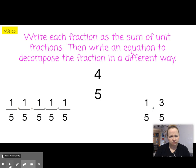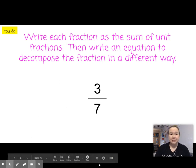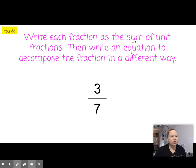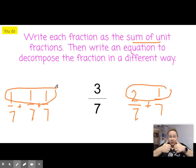Here's a you-do. Write each fraction as the sum of unit fractions, then write an equation to decompose the fraction in a different way. Go ahead and hit pause, give it a try. All right, so the sum of unit fractions is going to be that one, one-seventh plus, remember sum is plus, one-seventh plus one-seventh. There it is, sum of unit fractions. Now decompose the fraction in a different way. So what if we did two-sevenths plus one-seventh. So this equals three, this equals three, did you get it? Fist bump. Don't actually hit your computer, that could be bad.